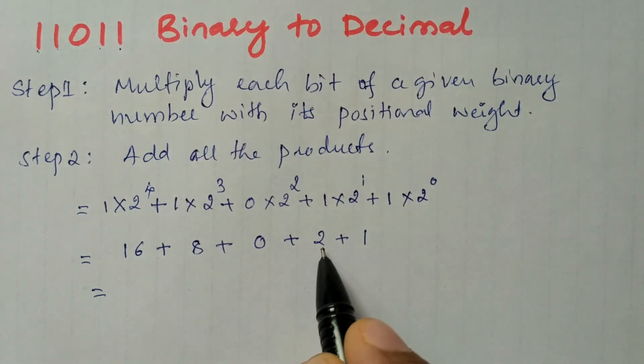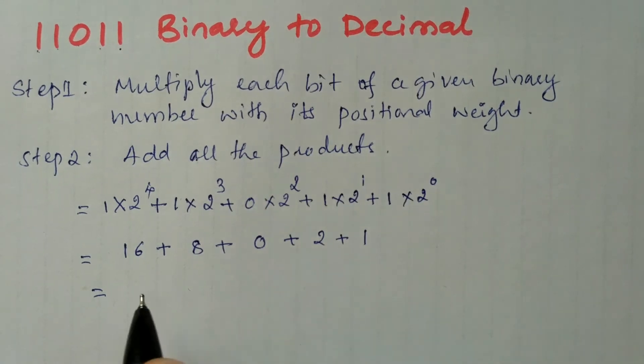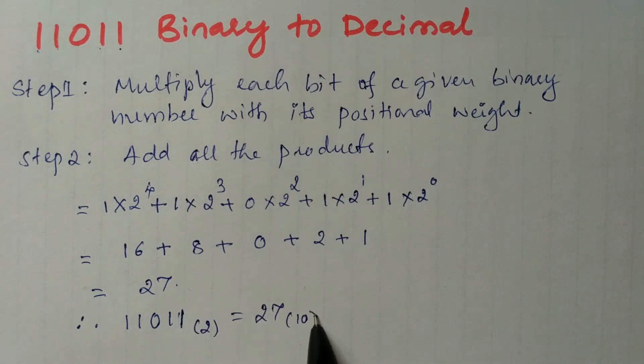24+2 is 26. 26+1 is 27. Therefore, 11011 base 2 equals 27 base 10.